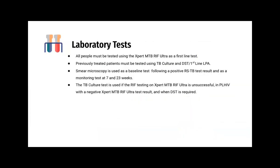In summary: all people must be tested using GeneXpert as a first-line test. Previously treated patients must be tested using TB culture and DST — first-line line probe assay. Smear microscopy is used as a baseline test following a positive rifampicin-sensitive TB result and as a monitoring test at seven and 23 weeks. TB culture is used if reflex testing is unsuccessful, in people living with HIV with a negative GeneXpert, and when drug sensitivity testing is required.